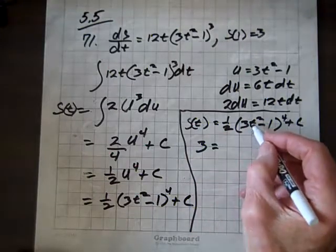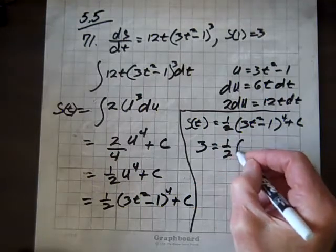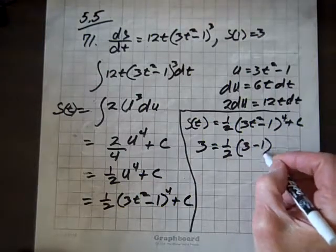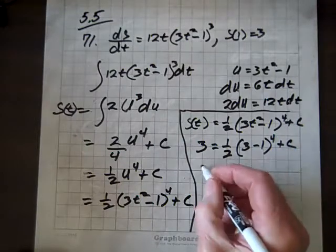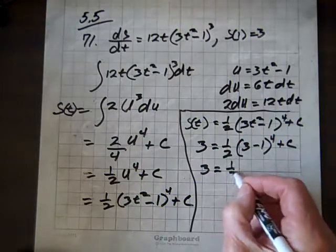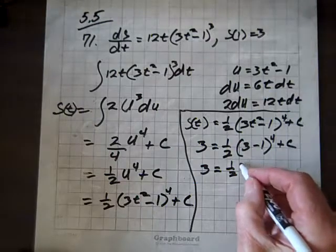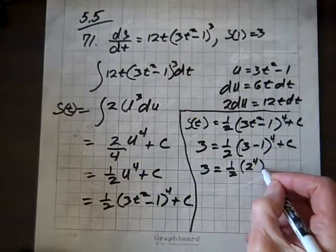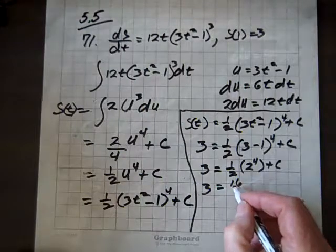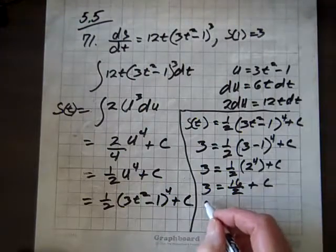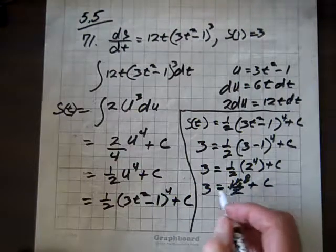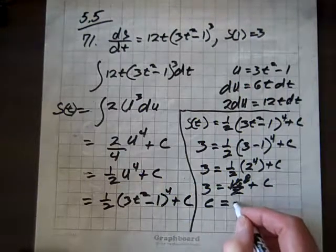So that's 2 to the fourth, plus C. So that's 3 equals, and 2 to the fourth is 16. So that's 16 over 2 plus C. And 2 into 16 is 8. Now, if we subtract 8 from both sides, we'll get C equal to negative 5.